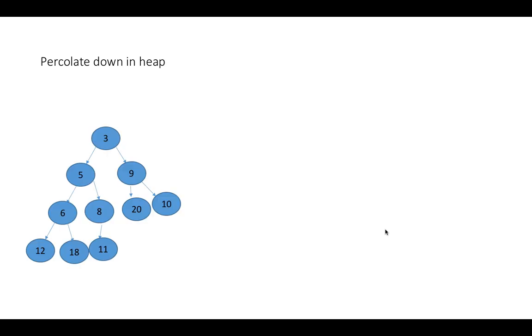Similarly, let's try to understand how the percolate down operation works in a heap. The percolate down operation is the exact opposite of the percolate up operation. In this case, the array currently satisfies the heap property, and we need to extract the root element. The process of taking out the root element is called the percolate down operation. Let's see this in the form of a binary tree — remember, this is just for explanation purposes, as a heap is actually represented as an array.